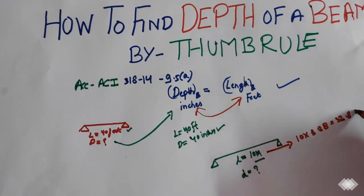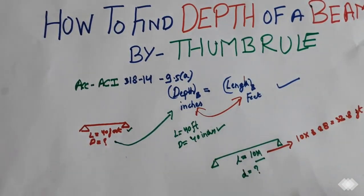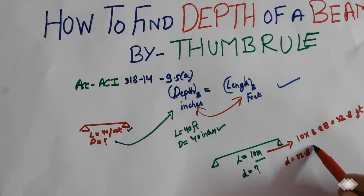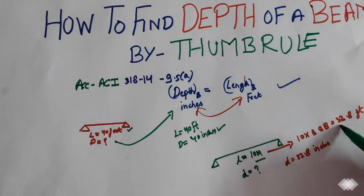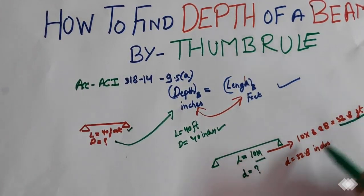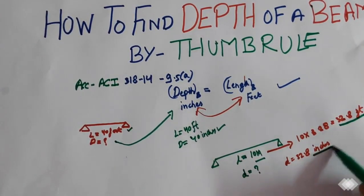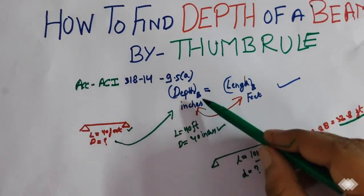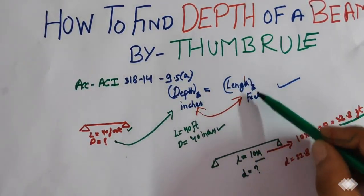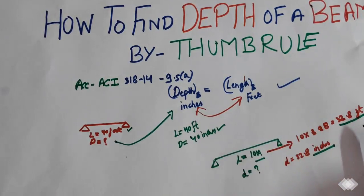So depth will be 32.8 inches. See, the length of the beam in feet is equal to the depth of the beam in inches. Depth of the beam in inches is equal to the length of the beam in feet.